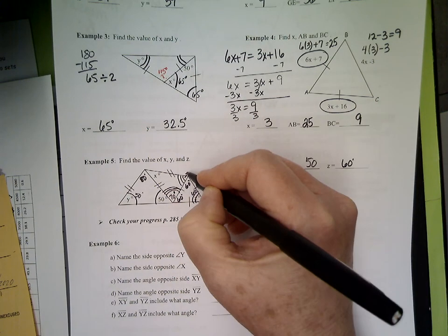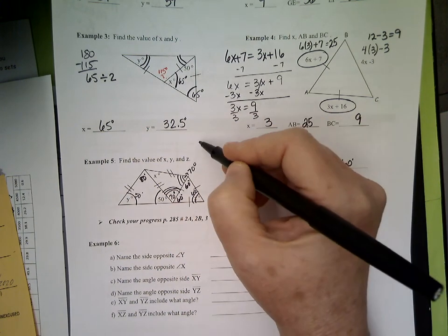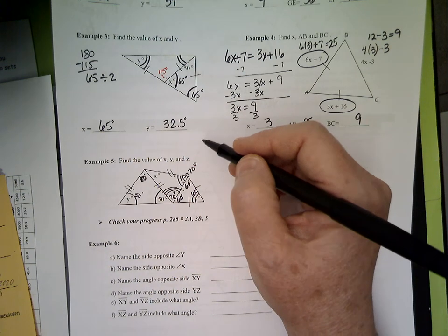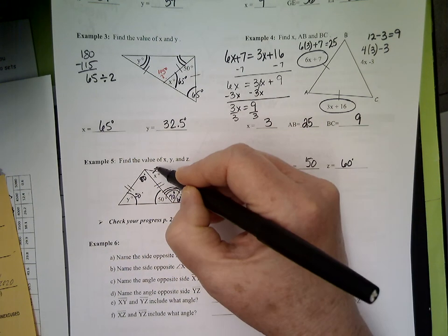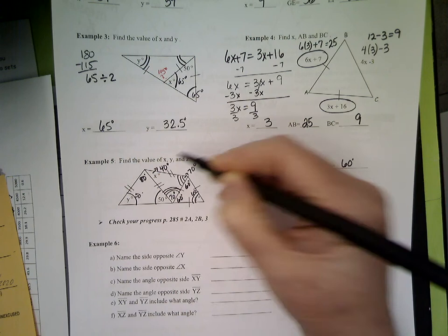Now I've used up 70 and 70. I've used up 140 degrees. What's left for x? 40.